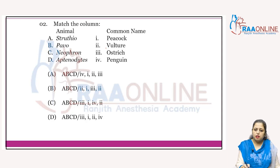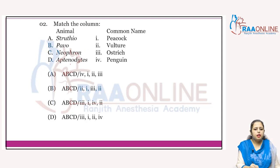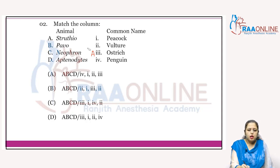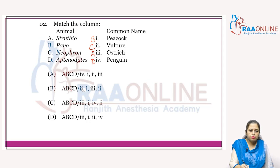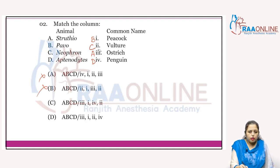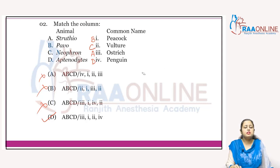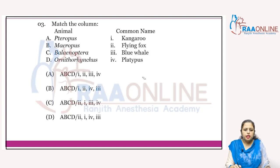The next match-the-column is also from NCERT page 59. Struthio is ostrich, Pavo cristatus is the peacock, Neophron is the vulture, and Aptenodytes is the penguin. When we match the columns, A3 is present in C and D, so A and B are cancelled. B1 is present in both, C2 is present in D, so the answer is D. The fourth one, Aptenodytes, is the penguin.